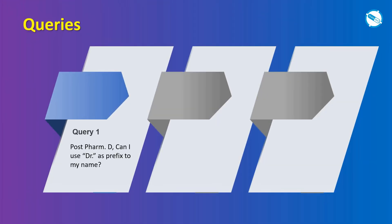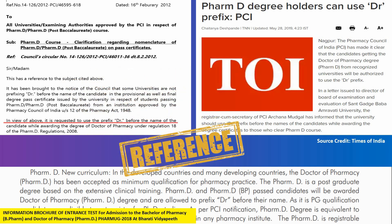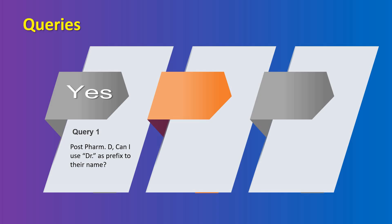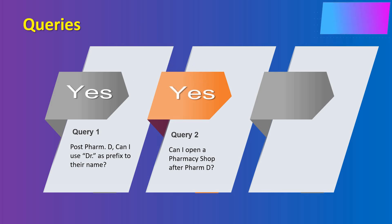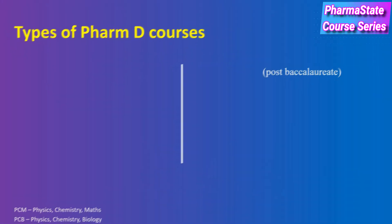The first common query: post Pharm D, can I use 'Doctor' as a prefix to my name? Yes, you can. There are various notifications in newspapers and from institutes themselves which mention that Doctor of Pharmacy degree holders are allowed to use the prefix 'Doctor' before their names. The second query: can I open a pharmacy shop after Pharm D? Yes. The third query: can I apply for PhD after Pharm D? Yes, you can.